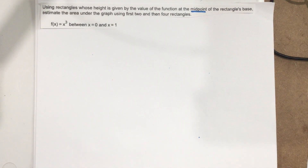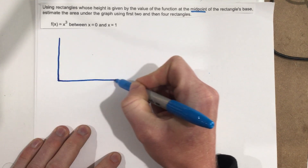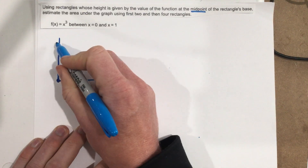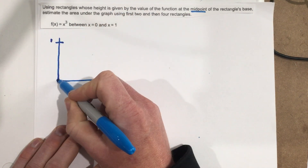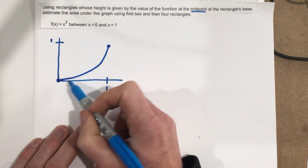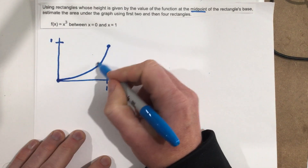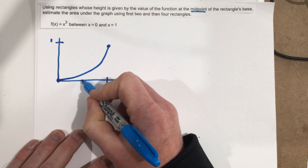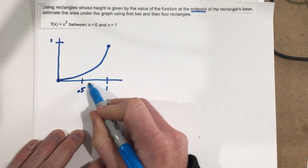Now they want us to use the midpoint. So the only thing that changes here is how we draw the rectangles. We're going to draw the graph first. We've got a cubic, so we know that when we plug in zero, zero cubed is zero, and we plug in one, one cubed is one. We want to split this into two rectangles of equal width, so we have 0.5. Rectangle one is going to have a width of half, and rectangle two is going to have a width of half.